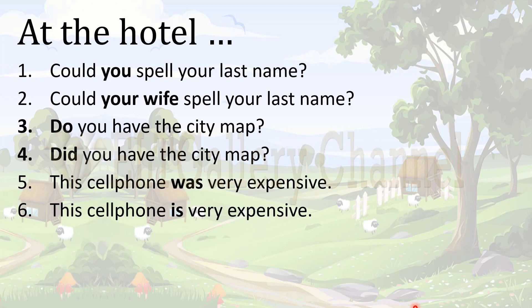This is different from 'This cell phone is very expensive.' Here the phone is probably still current or new, and still commands a high price. So we have a difference of tense — past and present — or a difference of subject — you and your wife — but the meaning of the sentences with these changes can be very, very different.